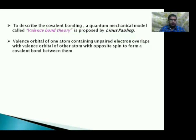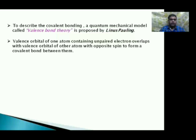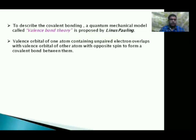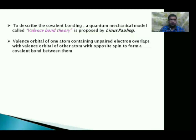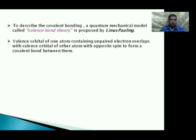Valence orbitals having unpaired electrons in them participate in the formation of bonds. Those valence orbitals should contain unpaired electrons with opposite spins, which means the valence orbital of one atom containing an unpaired electron overlaps with the valence orbital of another atom having the opposite spin to form a covalent bond between them.